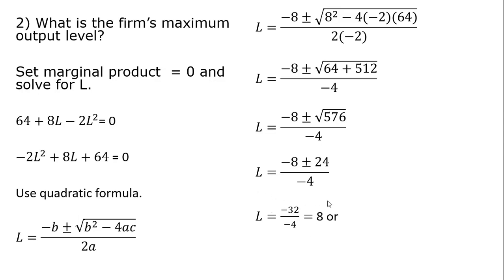And then we've got to check the other root here for L. And what I'll do here is I'll take minus 8 plus 24. And that's going to be 16. So minus 8 plus 24 is 16. 16 divided by negative 4 is negative 4. And that has no economic meaning. So we can ignore this result. So output will be maximized when L equals 8. When we employ 8 units of labor. So maximum output occurs at L equals 8.